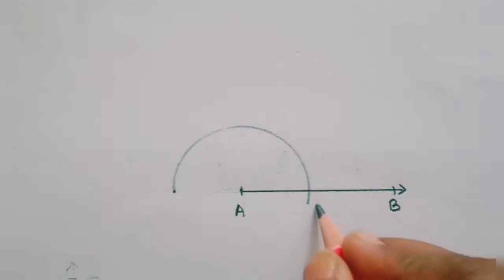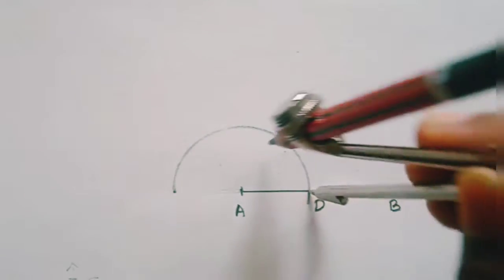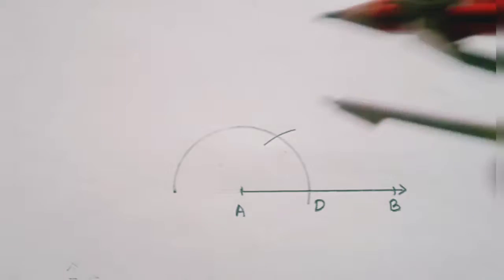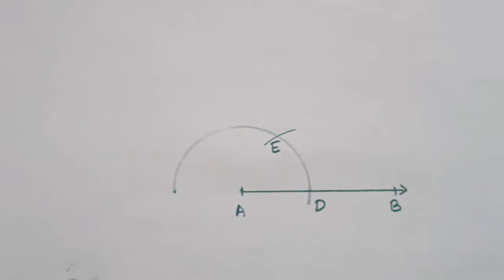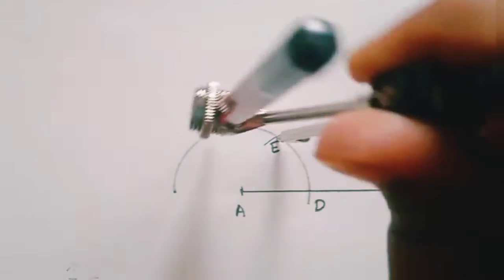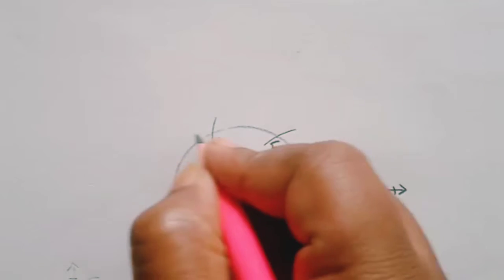Name this point as D. Now with the same radii you need to draw another arc. And now on this arc I will name this as E. Now with E as center you need to draw another arc. Name it as F.